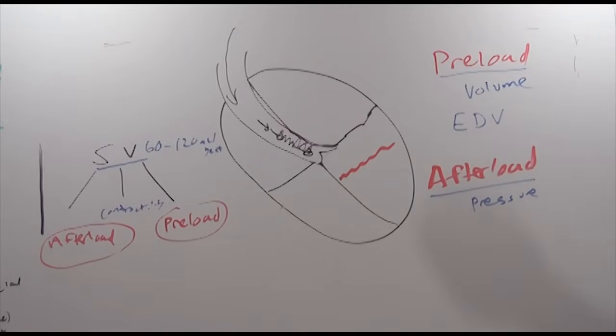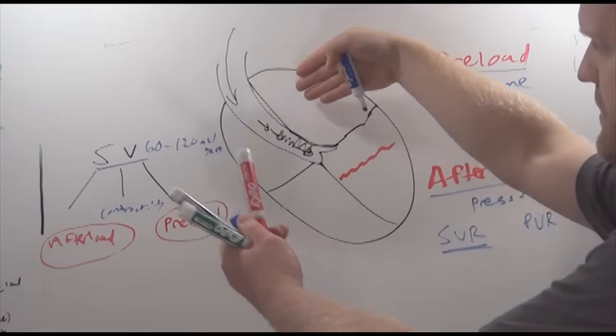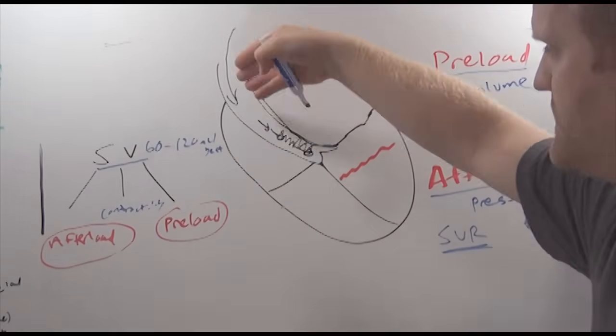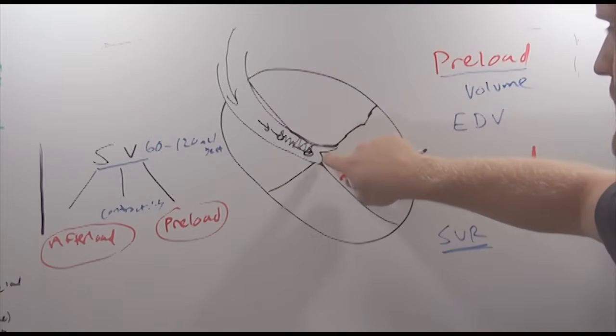And the two numbers that we're going to look at for that are systemic vascular resistance and pulmonary vascular resistance. So with systemic vascular resistance, what we're looking at is the resistance, the pressure, of the systemic circulation that it's pushing back against this aortic valve.